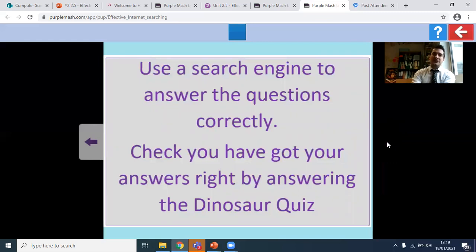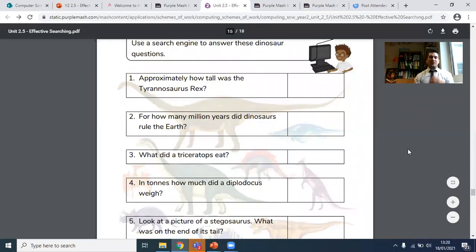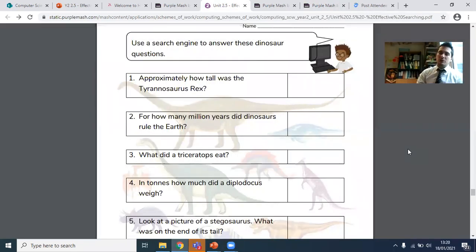Now, I want you to use the search engine to answer the questions correctly, and then you've got a quiz, the dinosaur quiz, in order to see if you found out all this information about dinosaurs. So these are the questions. Number one, approximately how tall was a Tyrannosaurus rex? When did dinosaurs rule the earth? Number three, what did a Triceratops eat? Number four, in tons, how much did a Diplodocus weigh? And finally, question number five, look at a picture.